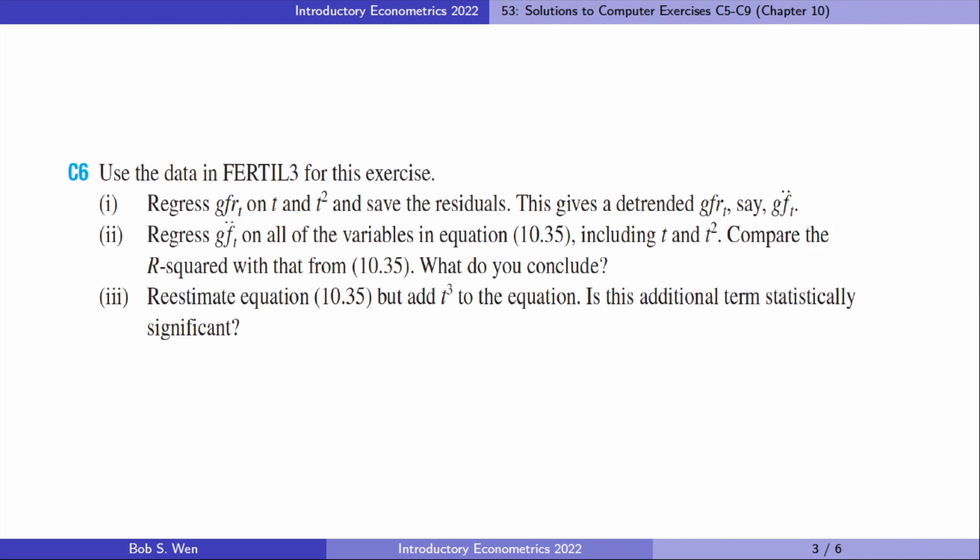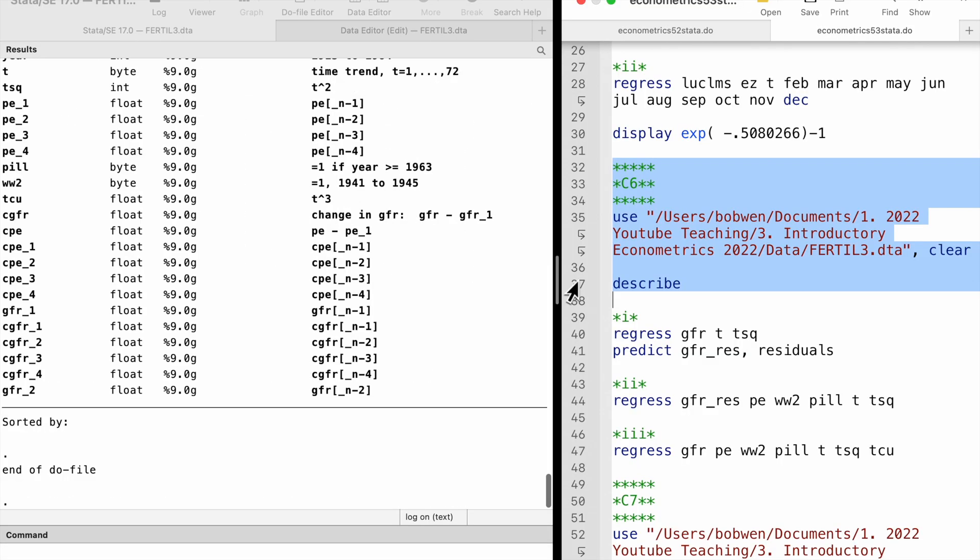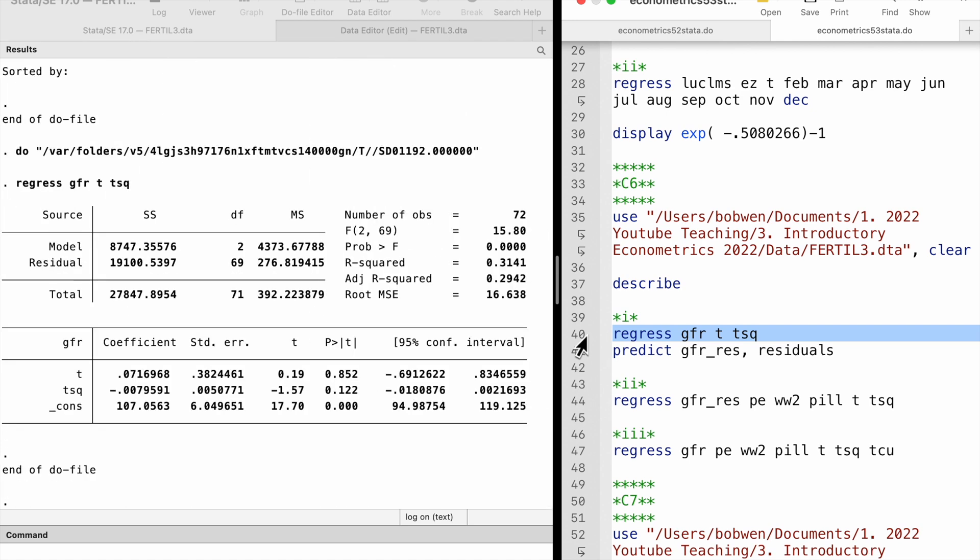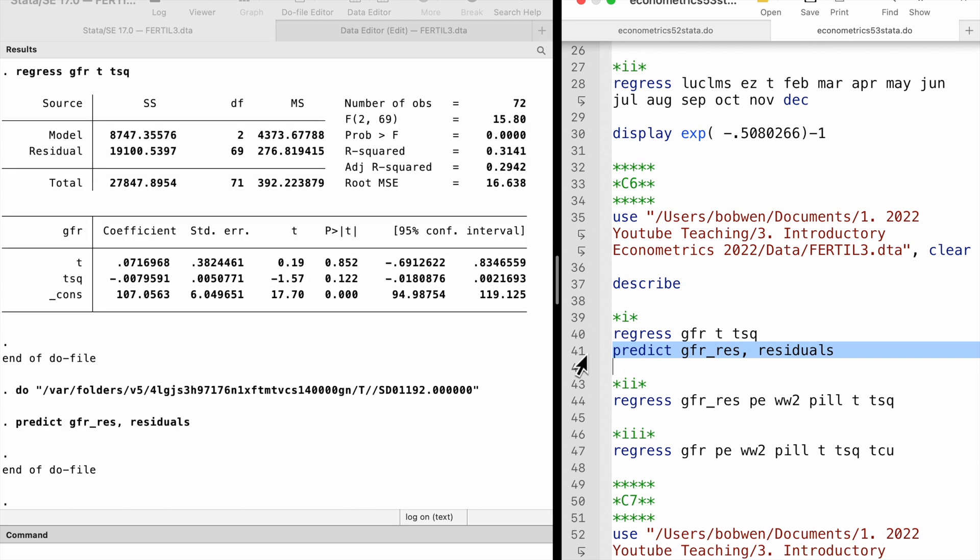Let's do computer exercise 6. We first regress the fertility rate on the time trend t and its square term. We save the residuals and regress the residuals on the personal tax exemption, two dummy variables, World War II and birth control pill, and t and squared t.